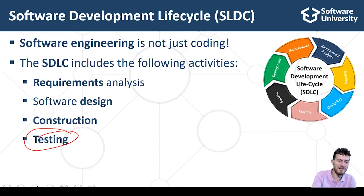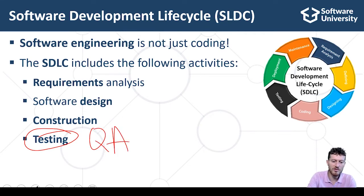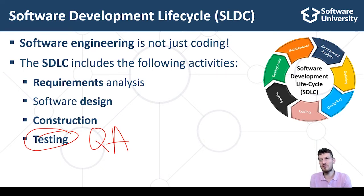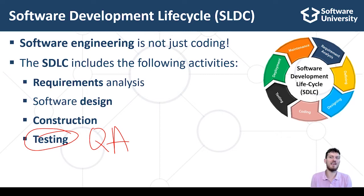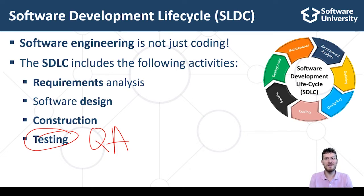Software testing and quality assurance confirms that the developed software conforms to the requirements. Software testing and verification is performed by quality assurance engineers, or QA engineers. QA engineers test the code by performing manual and automated testing and report bugs in the bug tracking system, then track the work on fixing those bugs later.